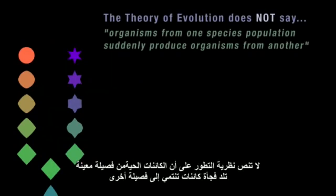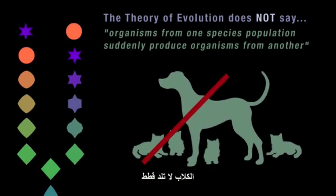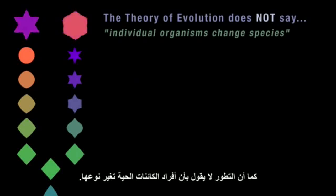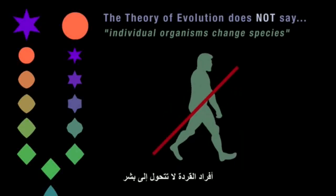The theory of evolution doesn't say that organisms from one species' population suddenly produce organisms from another. Dogs don't produce cats. Nor does it say that individual organisms change species. Individual apes don't morph into humans.